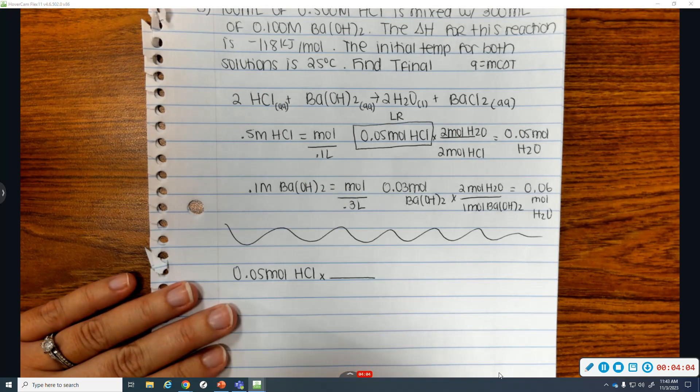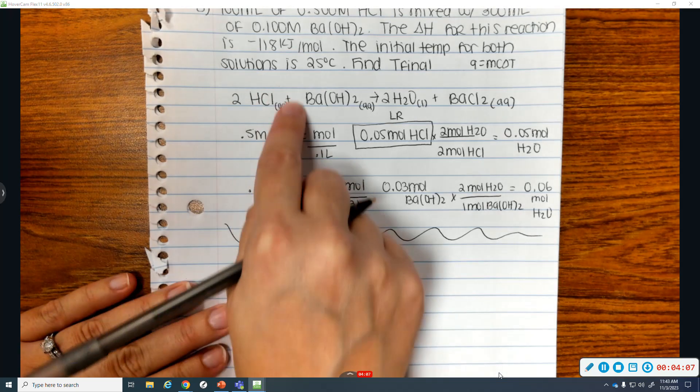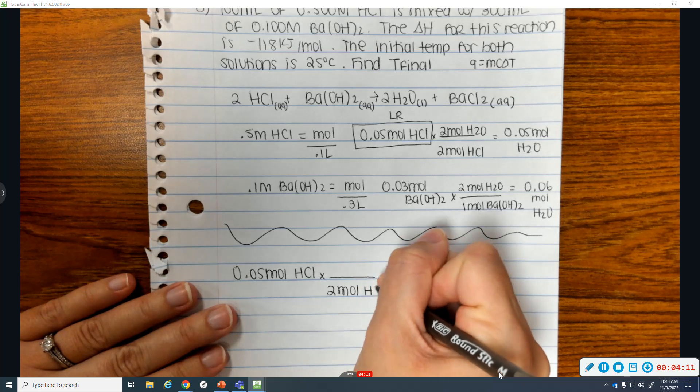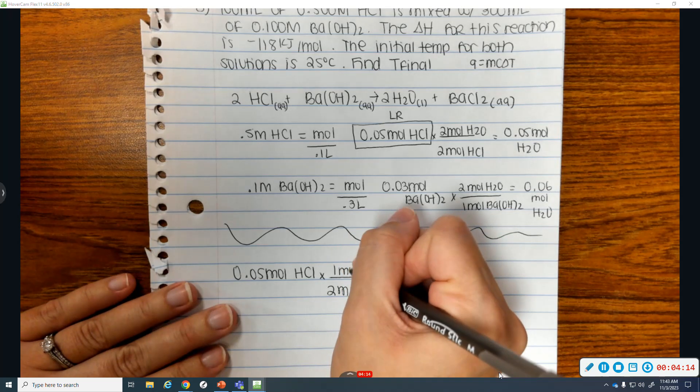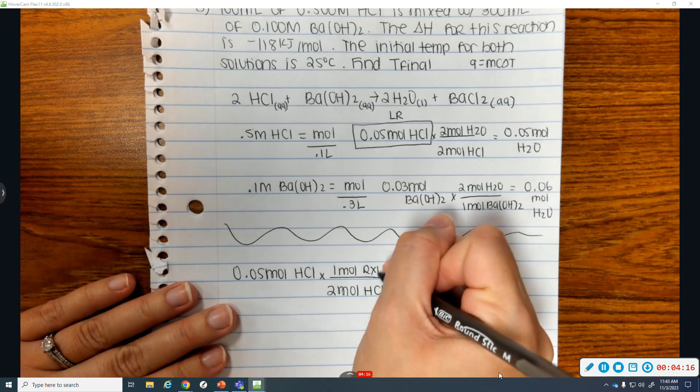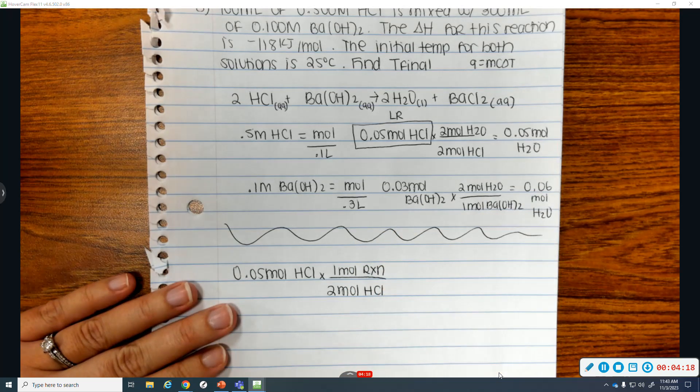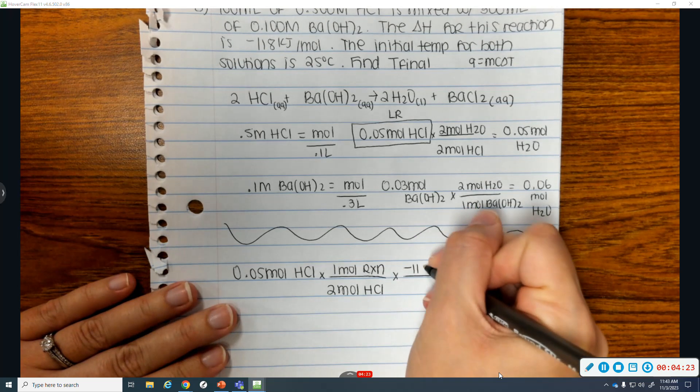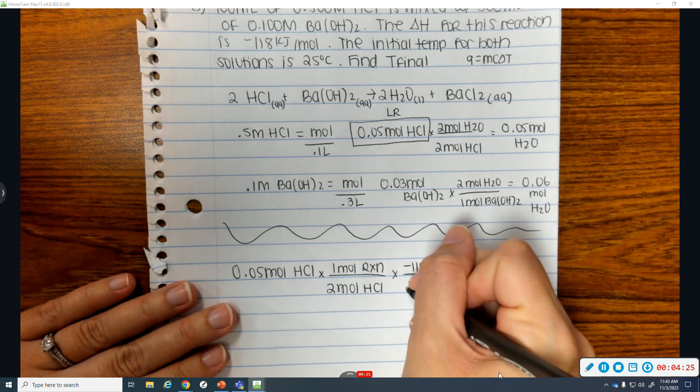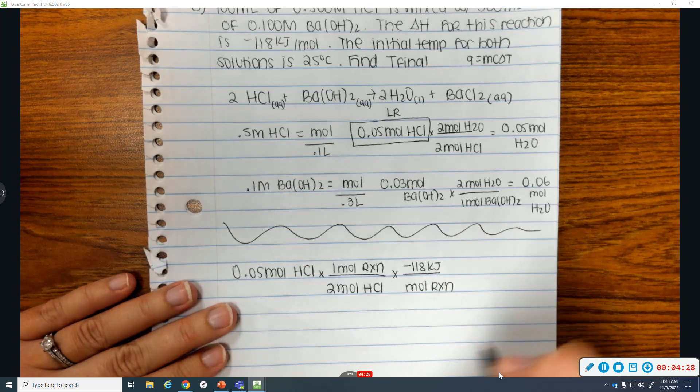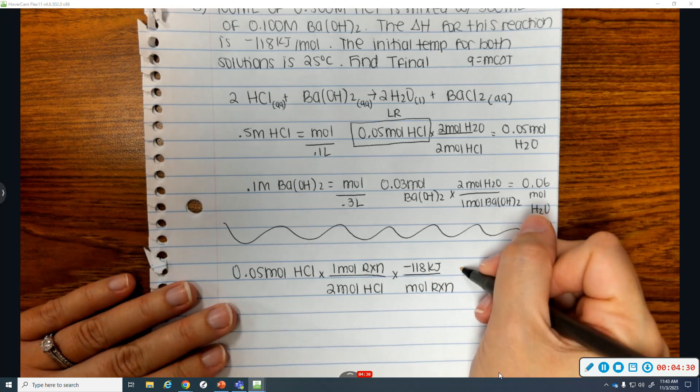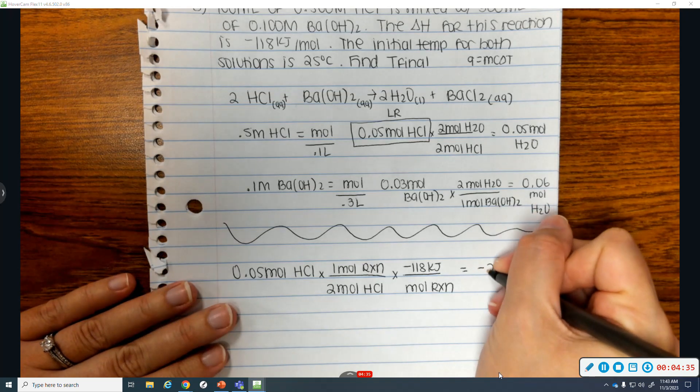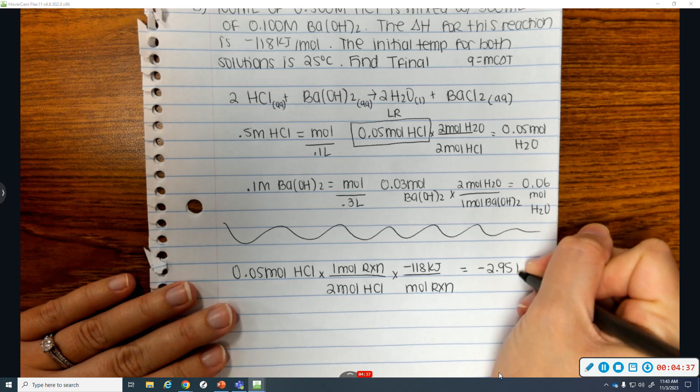Every one reaction will react to moles of HCl. So, to cancel out units, if this is moles of HCl, I'm going to put two moles HCl at the bottom. And there are two moles of HCl in every one mole reaction. Okay, now, my kilojoule unit is negative 118 kilojoules per mole reaction. So, all of your units cancel. And you're left with your kilojoule value. Which is going to be negative 2.95 kilojoules.